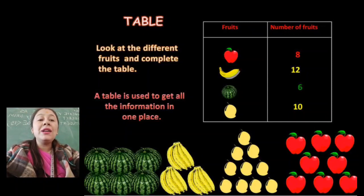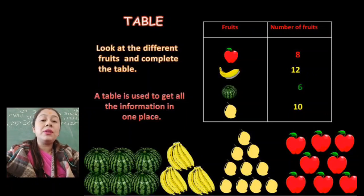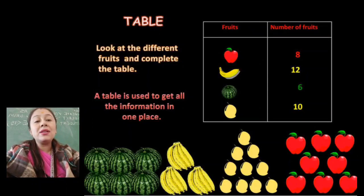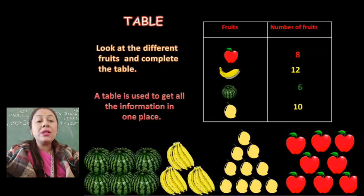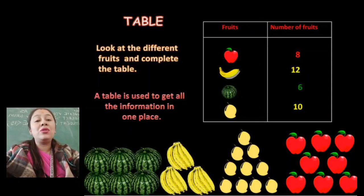For example, you can see there are eight apples, twelve bananas, six watermelons, and ten mangoes. From that, you can see which fruit is more in number — bananas, yes, there are twelve — and which fruit is least in number — watermelon. So from the table, we can collect information in one place. That is the use of Smart Charts, which you are going to do in today's class.